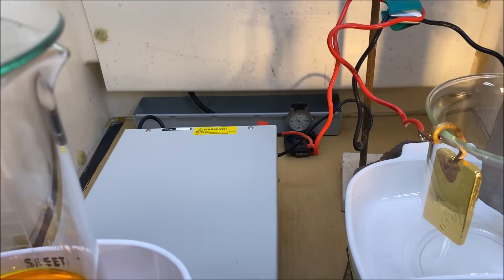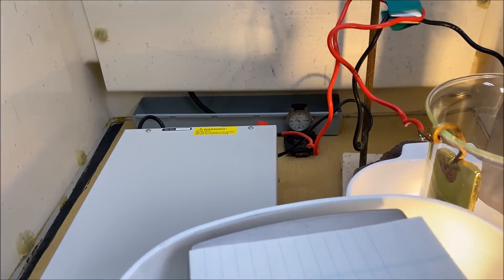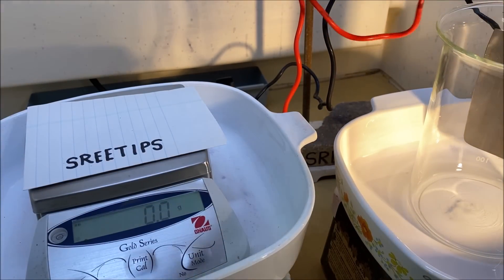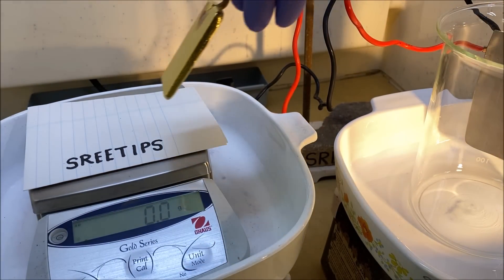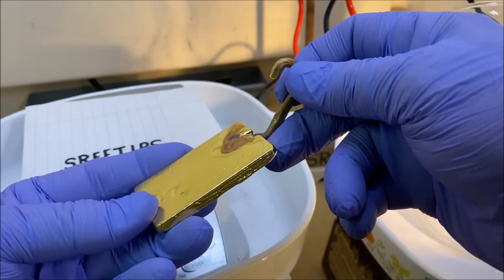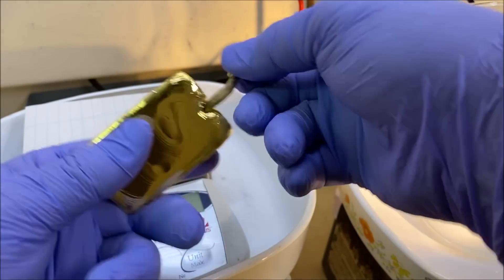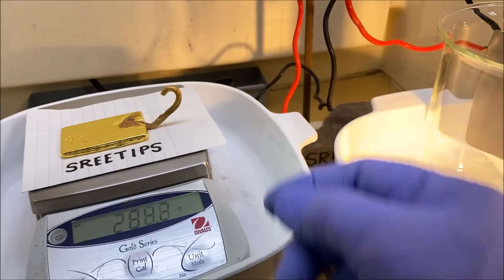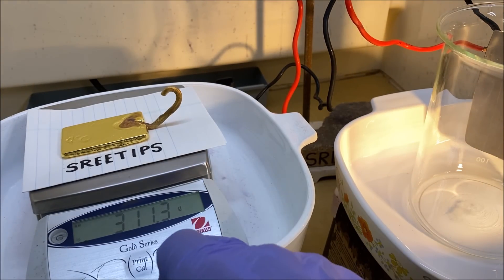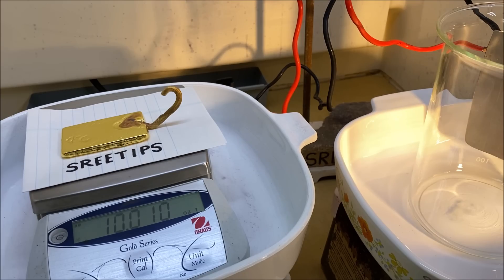Before we get started with the experiment, I want to get a weight on the anode bar. I'm just going to unclip this and throw it on our scale. Let's see what kind of weight we got on this thing. It's 311.3 grams, which is right at 10 troy ounces.